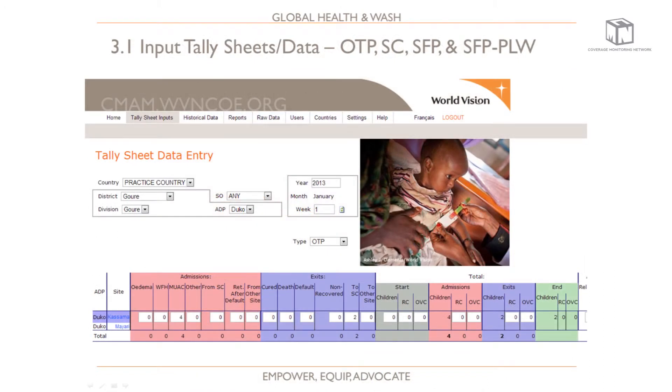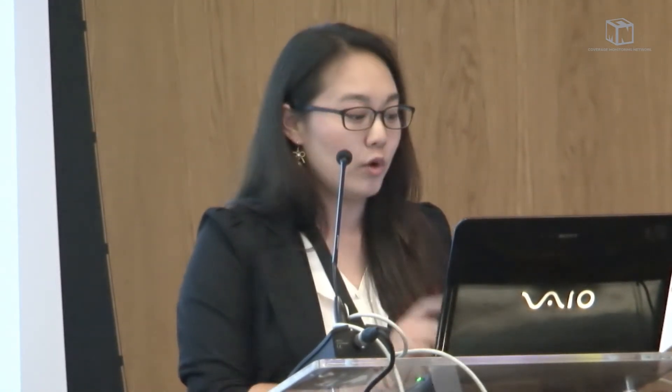You can input data for all four components of CMEM: OTP, SC, SFP, and SFP-PLW. You enter admissions and exits, and then the total admissions, total exits, and total number of children at the end of the month are all calculated automatically. That end-of-month total is then carried forward to the next month so you don't have to re-enter that information.